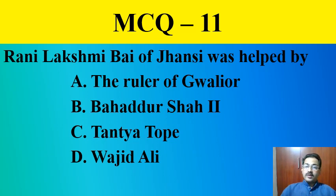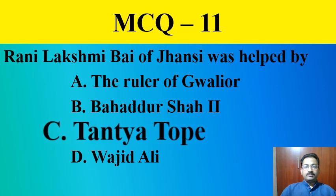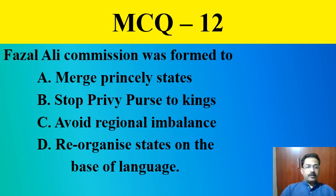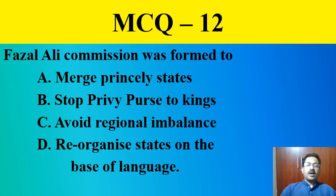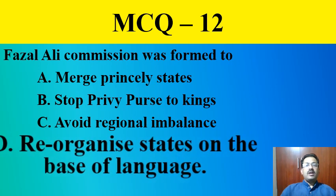MCQ question number eleven: Rani Lakshmi Bai of Jhansi was helped by — the ruler of Gwalior, Bahadur Shah II, Tatya Tope, or Vajid Ali Shah. The correct answer is Tatya Tope. MCQ question number twelve: The Fazal Ali Commission was formed to — merge princely states, stop privy purse to kings, avoid regional imbalance, or reorganize states on the basis of language. The correct answer is reorganize states on the basis of language.